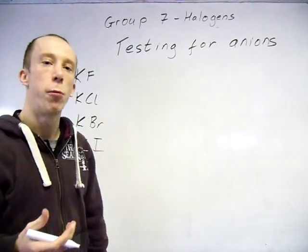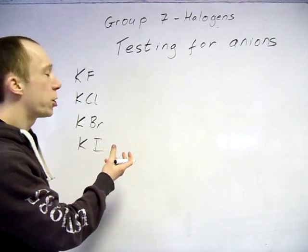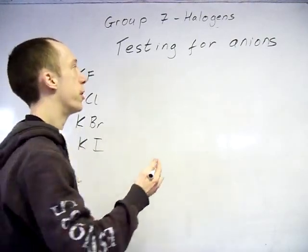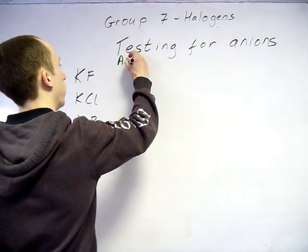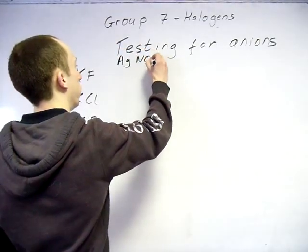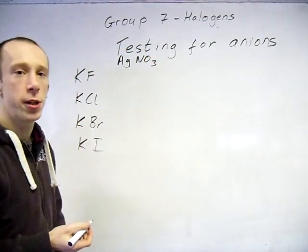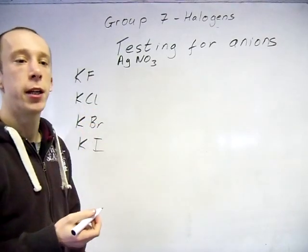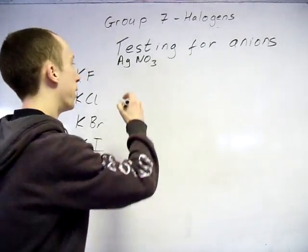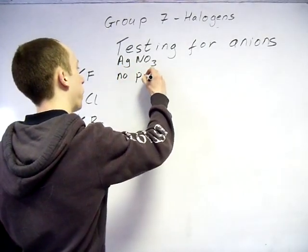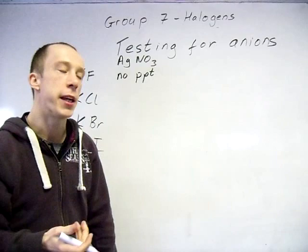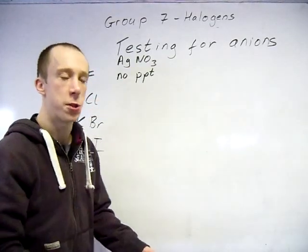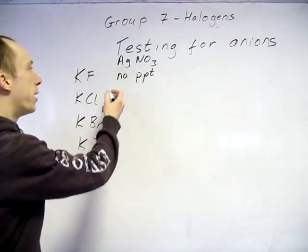So, first off, what you want to actually have in there is what you see when you add the silver nitrate. So, silver nitrate there, AgNO3. Now, with the fluoride ion, you don't actually see anything. The reason why is silver fluoride is soluble, so it just dissolves straight away.